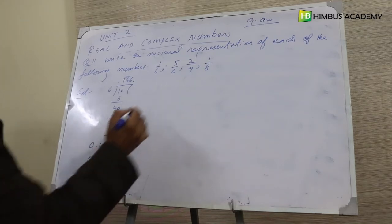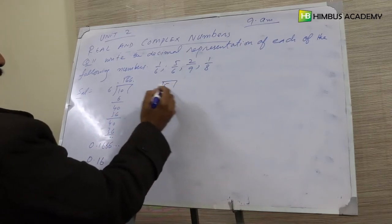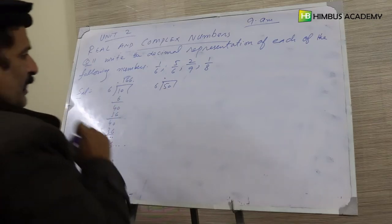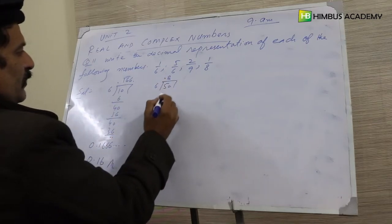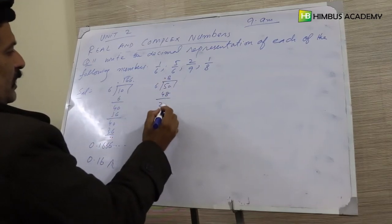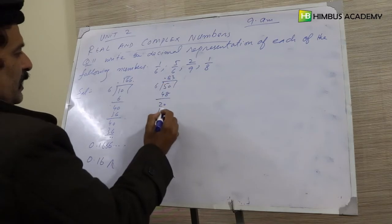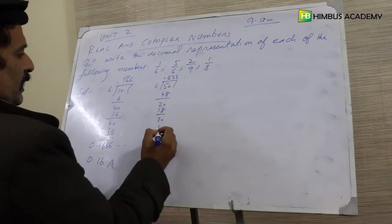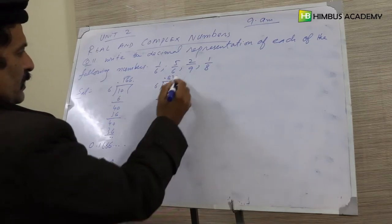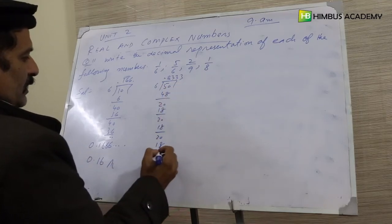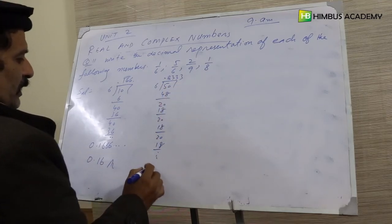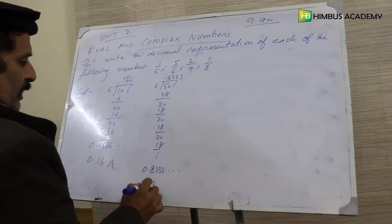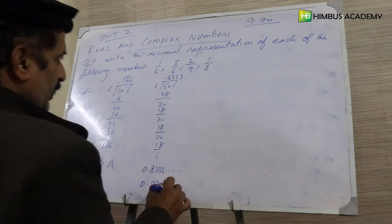5 divided by 6: performing the long division, we get 0.8333 repeating. So 5 over 6 is equal to 0.8333 dots.